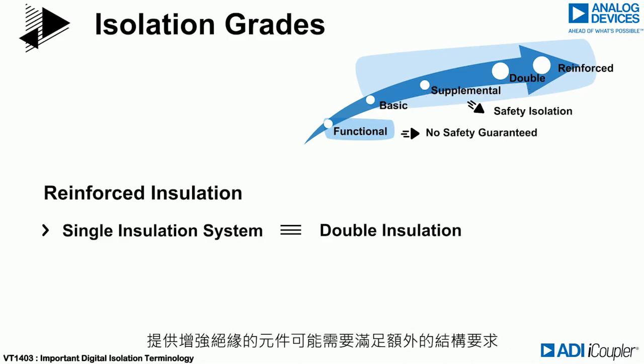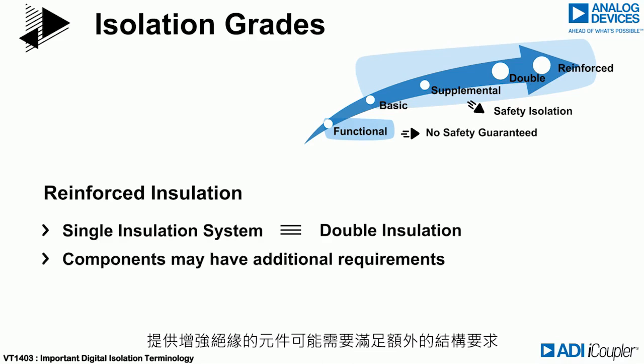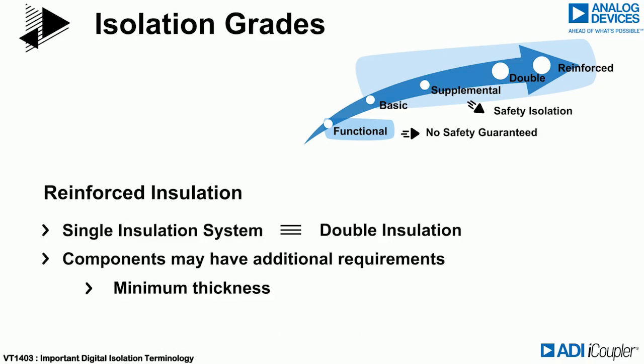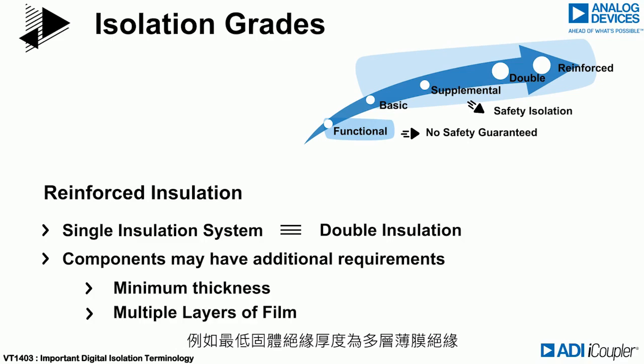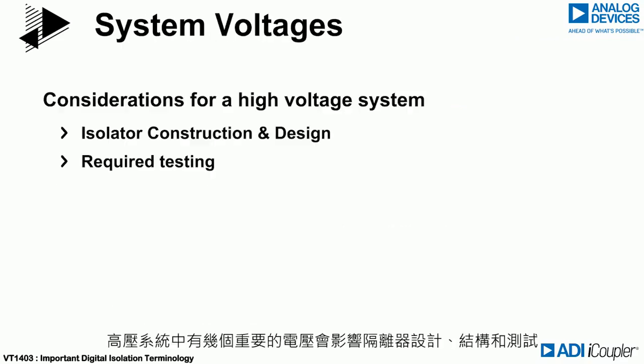Components providing reinforced insulation may need to meet additional structural requirements, such as minimum thickness of solid insulation or multiple layers of film insulation. There are several important voltages in high voltage systems that impact isolator design, construction and testing.